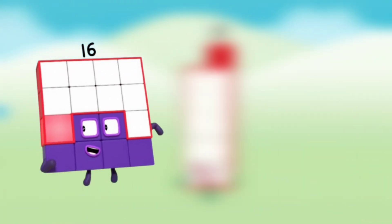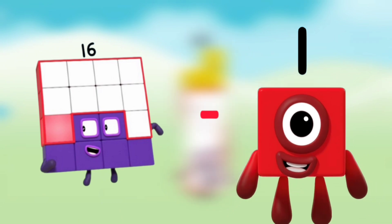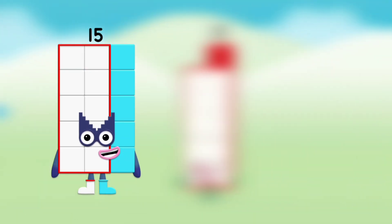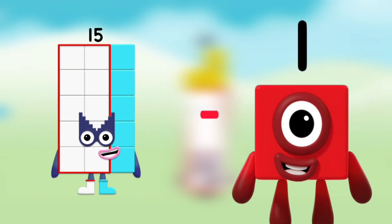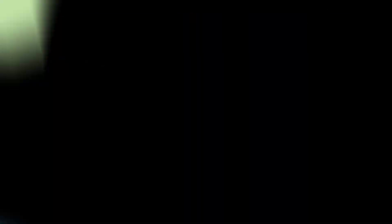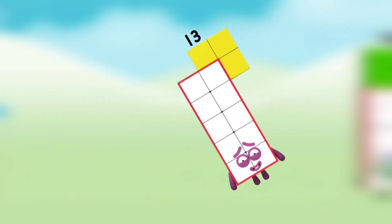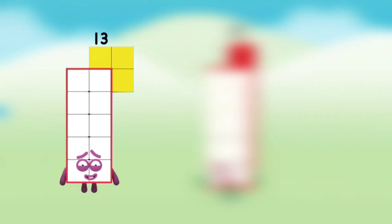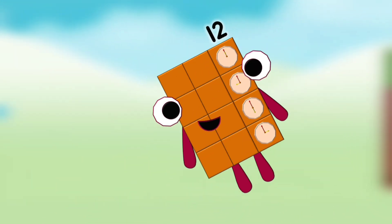Number blocks 16 minus number block 1 equals number blocks 15. Number blocks 15 minus number block 1 equals number blocks 14. Number blocks 14 minus number block 1 equals number blocks 13. Number blocks 13 minus number block 1 equals number blocks 12.